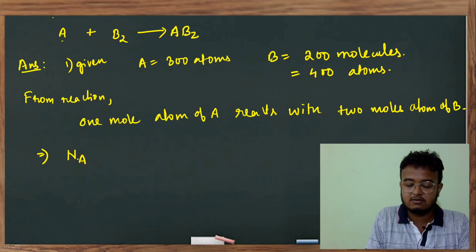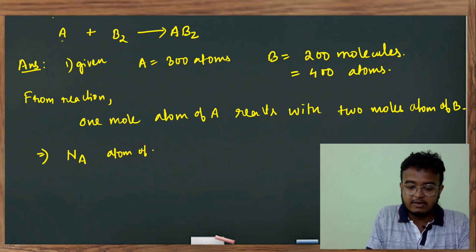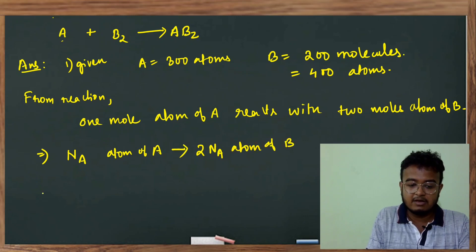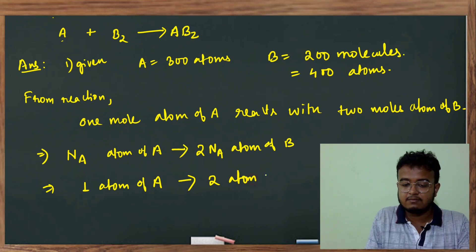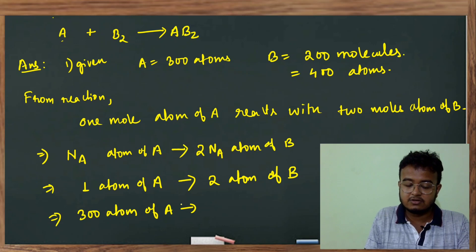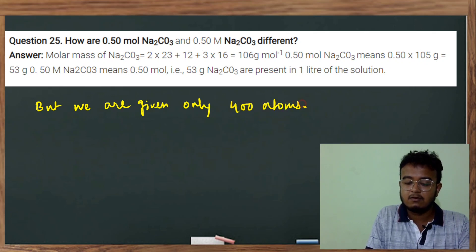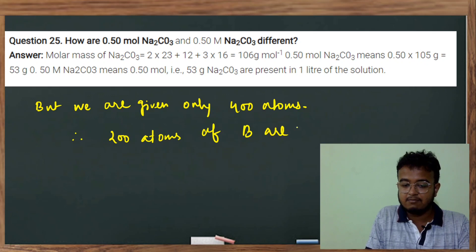1 mole is Na — that is 6.022 × 10^23. So Na atoms of A react with Na atoms of B. This means 1 atom of A reacts with 2 atoms of B. But we are given only 400 atoms of B2, so 200 atoms of B are needed.